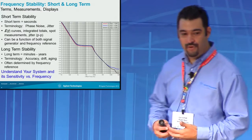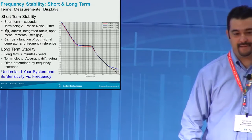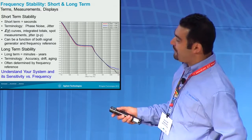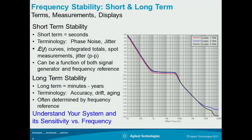What are some terms? A common metric for phase noise is single sideband phase noise. Phase noise is a short-term stability phenomenon, usually in seconds — sometimes referred to as jitter. We have the script L(f) curves, which are single sideband phase noise plots at a particular frequency. This phase noise is a function of both your signal generator, your synthesizer, your VCOs, and your system.